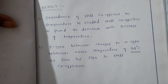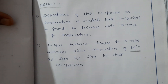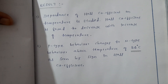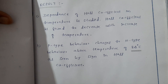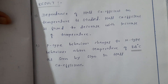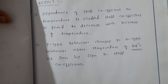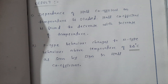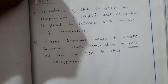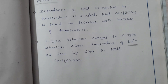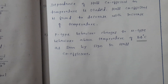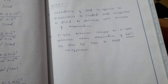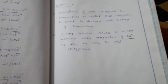You can write the result here. The dependency of Hall coefficient on temperature has been studied. Hall coefficient is found to decrease with increase of temperature. The P-type behavior of the germanium sample changes to N-type behavior above a temperature of 84 degree Celsius, as seen by the sign change in the Hall coefficient.